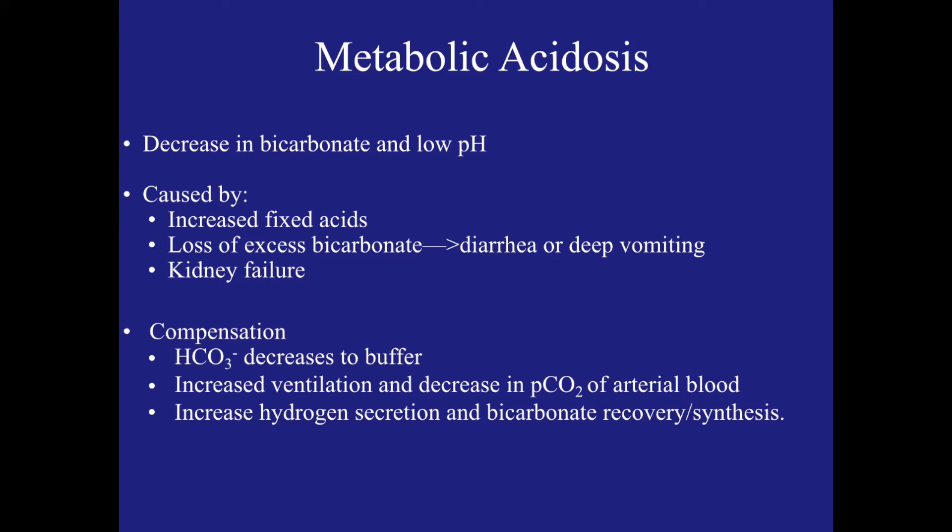Metabolic acidosis is caused by decreasing the arterial blood bicarbonate concentration to below 24 millimolar and to a pH of less than 7.37. This is caused by an increase of fixed acids. All acids except for CO2, which is a volatile acid, are fixed. Examples of fixed acids are lactic acid and ketone bodies.